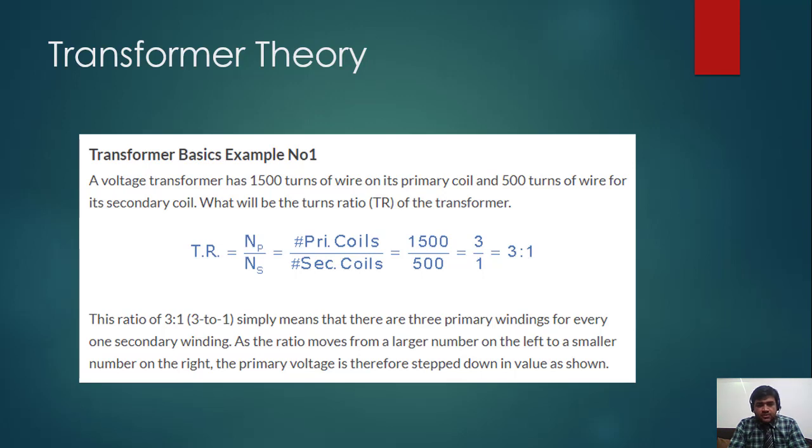Let's see one example that I have solved for you. A voltage transformer has 1500 turns of wire on its primary coil and 500 turns of wire for its secondary coil. What will be the turns ratio of the transformer? TR equals primary turns divided by secondary turns, so 1500 divided by 500, it will be equal to 3 ratio 1.